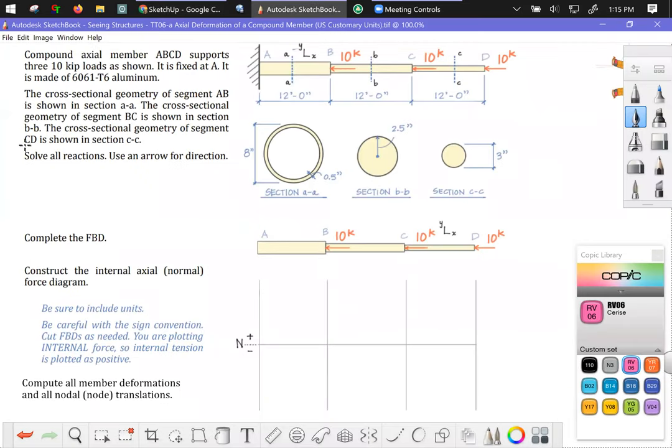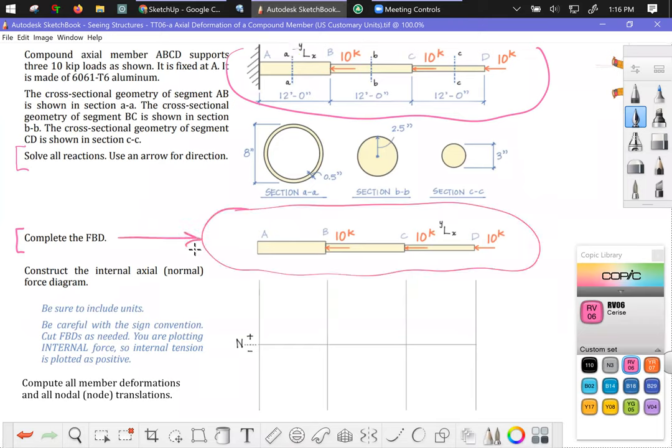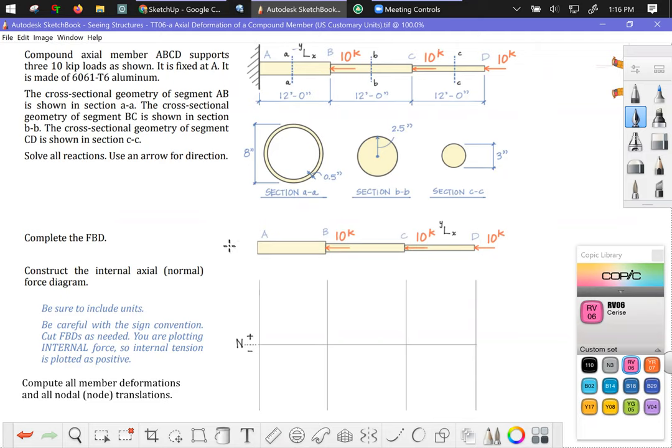We're asked to do a few different things. So first, we're asked to solve all of the reactions. We're asked to complete the free body. So this picture up at the top, we know that this is a loading diagram. We know that this is going to be our free body, but it's not yet in equilibrium because we clearly have 30 kips of force going to the left. And we need to put that in equilibrium by adding the reaction at A like that. And of course, this problem is so, the numbers are very easy to add in your head. So you don't need to put pen to paper for such a simple computation.